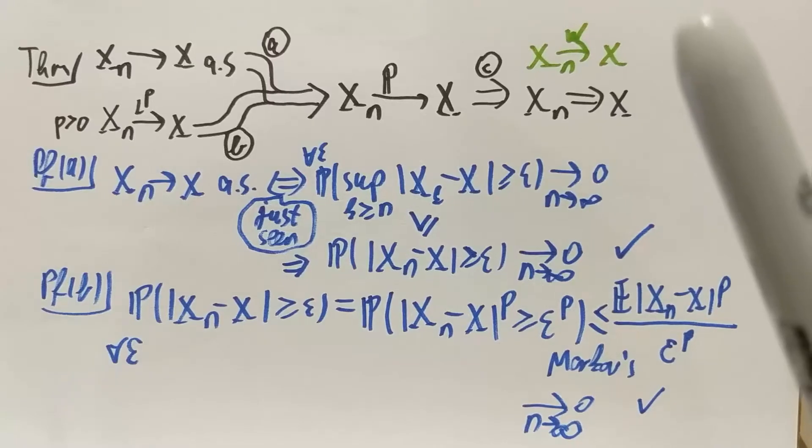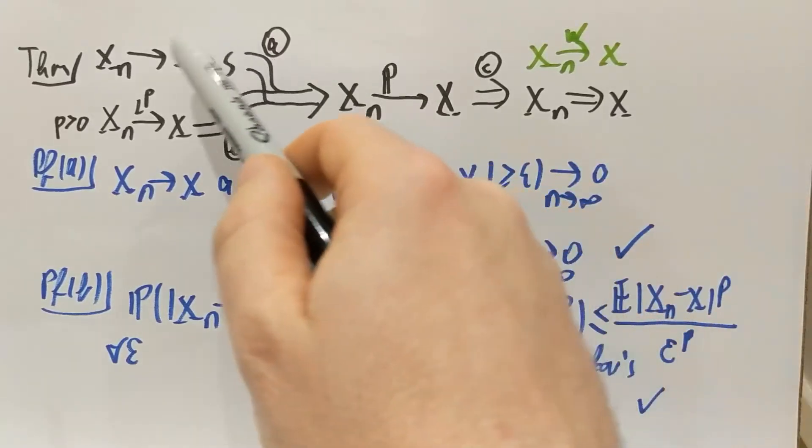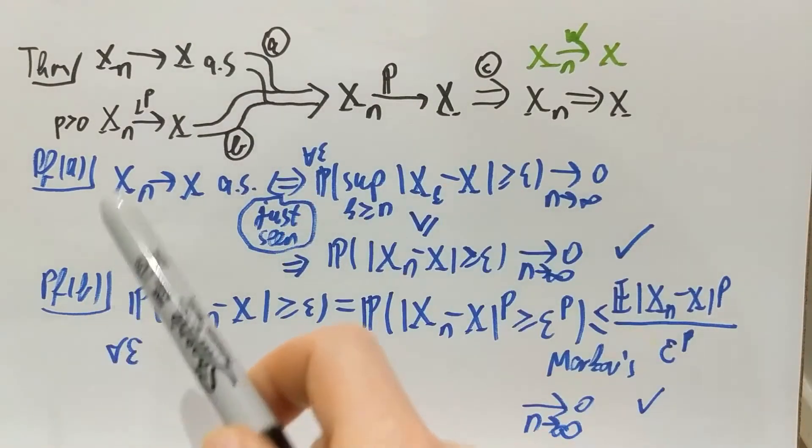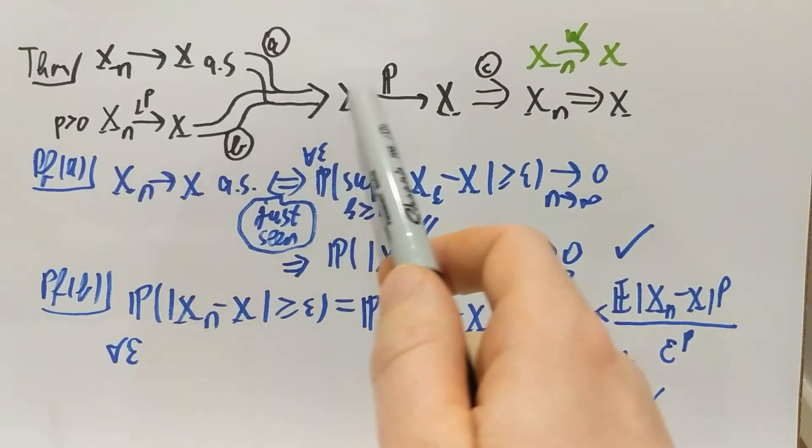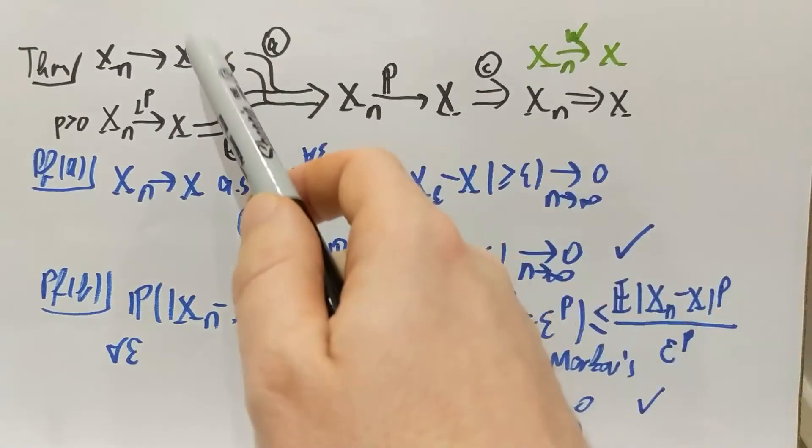Hi everyone, my last example is again a counterexample for this implication. I'm going to show you some sequences which converge in LP and in probability and weakly but not almost surely. The way I do that is a bit different from the previous examples I showed you.